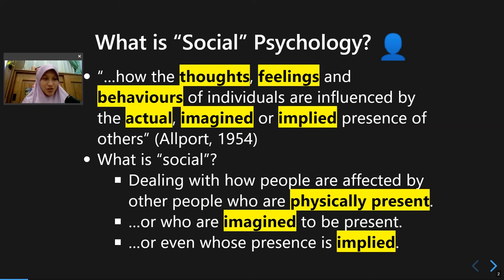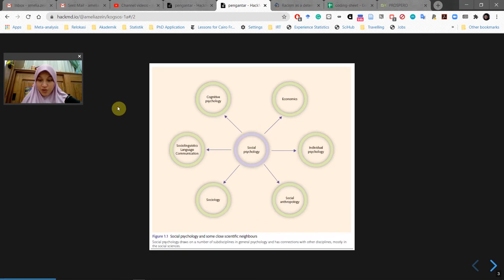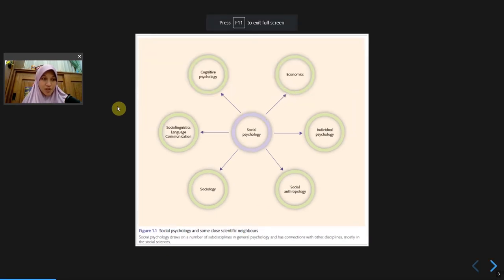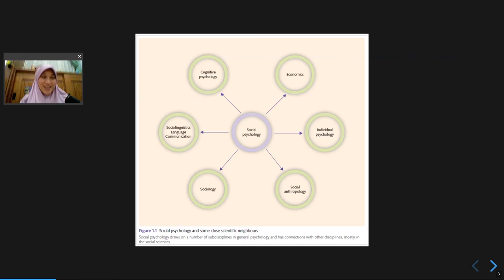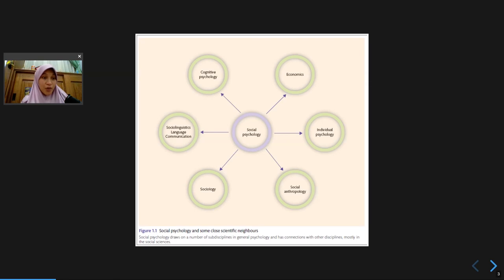I'm going to give you a broader picture about the relationship between social psychology and several other sub-disciplines in psychology, and also completely different disciplines. Of course there is no way those disciplines do not interact with each other. We are studying very complex phenomena and it's impossible to understand them by using only one or two sub-disciplines. Scientists across disciplines need to work together as a team.